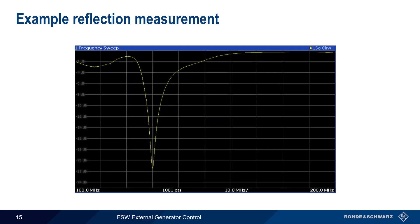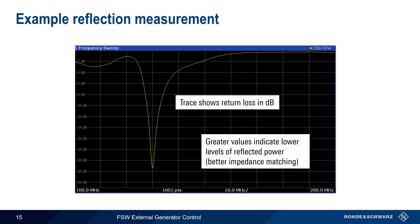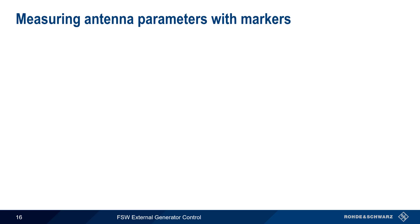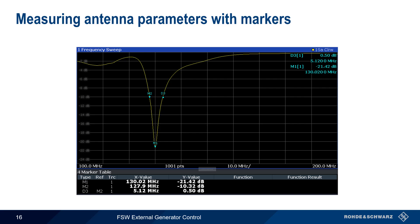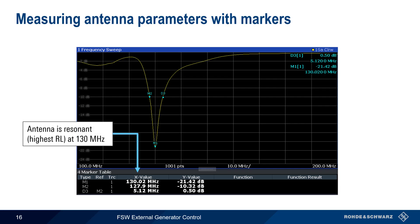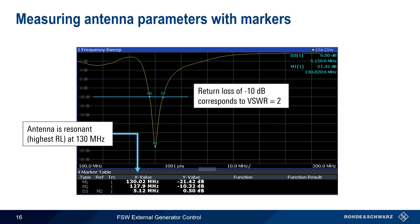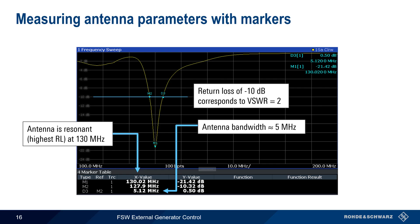Here is an example reflection measurement result. The trace shows return loss in dB. Greater values of return loss indicate lower levels of reflected power, and thus better impedance matching between source and load. Here again we can use markers to obtain more detailed numerical results. The point of maximum return loss occurs at approximately 130 MHz, sometimes called the resonant frequency of the antenna. The points at which return loss is minus 10 dB correspond to the points at which VSWR is 2. These values are often used to define the bandwidth of an antenna, and in this example the distance between these two points is slightly greater than 5 MHz.